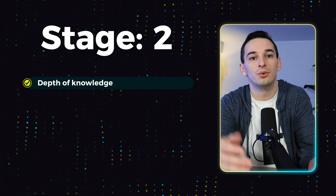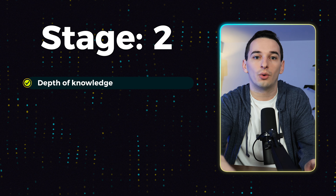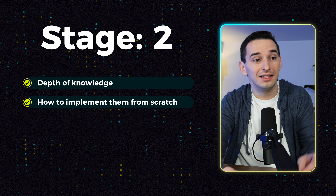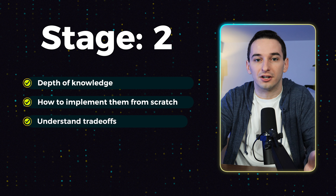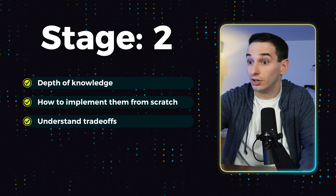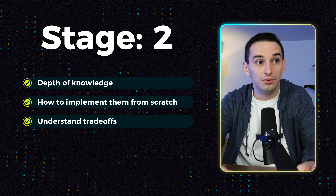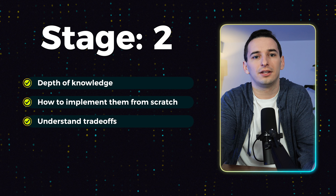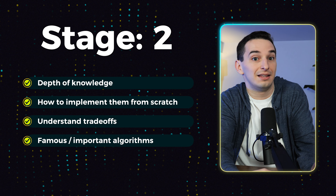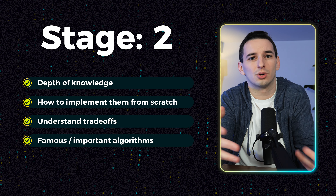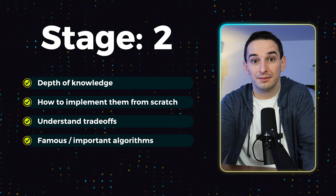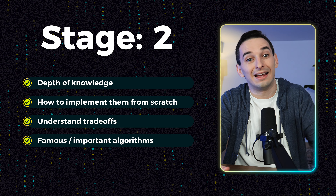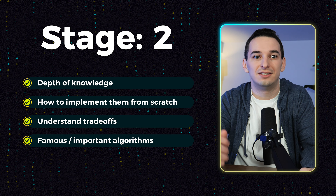The second stage is to go more in depth on each individual data structure. For each one, make sure you know how to implement it from scratch, and make sure you understand what the trade-offs are — when shouldn't you be using it and when should you be? And finally, also make sure you are familiar with the major algorithms associated with that data structure, and that you know how to implement them if you need to.